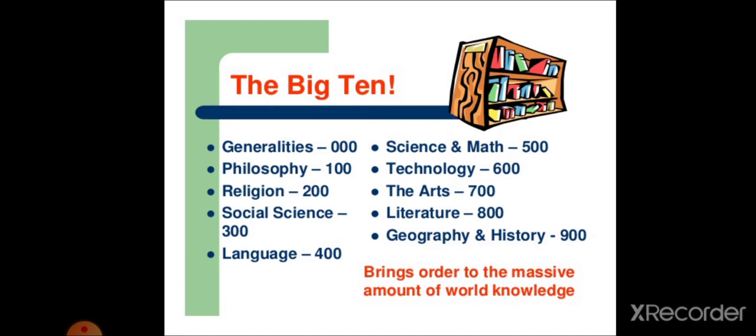Generalities, 000. Philosophy, 100. Religion, 200. Social Science, 300. Language, 400. Science and Math, 500. Technology, 600. The Arts, 700. Literature, 800. Geography and History, 900.